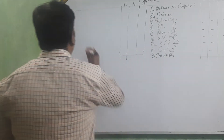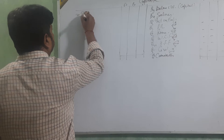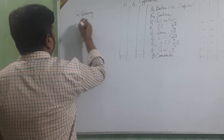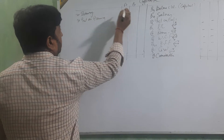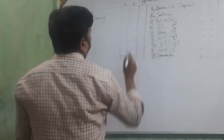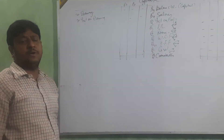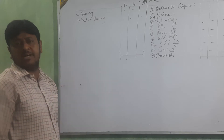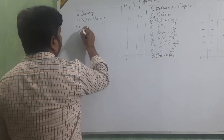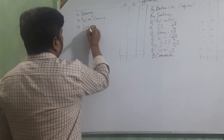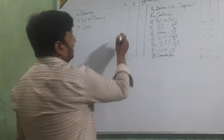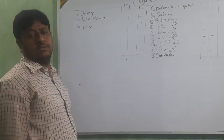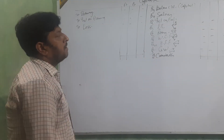On the debit side: drawing and interest on drawing. If drawing is given in the question, that we show here. If interest on drawing is given, then also on the debit side. If there is any type of loss, that also goes on the debit side. This is the pro forma of the capital account.